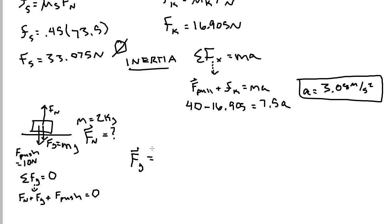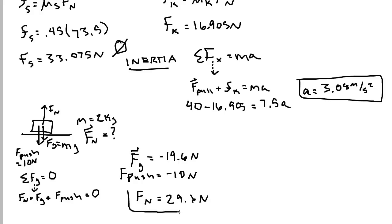The force due to gravity is 2 times negative 9.8, which is negative 19.6 Newtons. The force push is directed down, so it is negative 10 Newtons. Plugging those in and solving for the normal force gives 29.6 Newtons. The normal force increases when you push down — Newton's third law, equal and opposite reaction. This is why your scale measures normal force, not your weight. That wraps up this tutorial to help you with your friction quiz. Good luck.